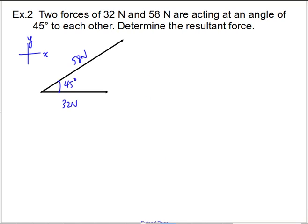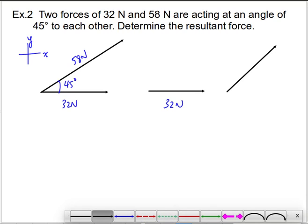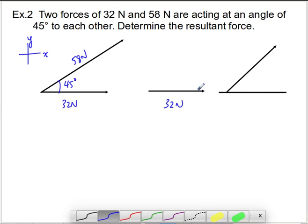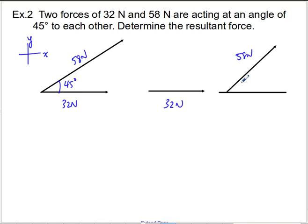Looking at each force individually: F1 is 32 newtons, and F2 is 58 newtons at 45 degrees. I'll call these F1 and F2. The reason I'm looking at them separately is because one of the focuses here is the idea of vector components.